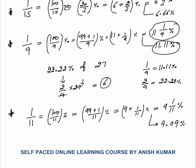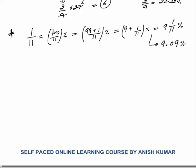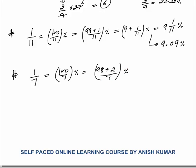Finally, 1 by 7 and 1 by 14 — these fraction-to-percentage conversions will help you solve Data Interpretation and Quant questions faster. One by 7 equals 100 by 7 percent. Since 100 is not divisible by 7, write as 98 plus 2 by 7, giving 14 and 2/7 percent, or 14.28 percent.